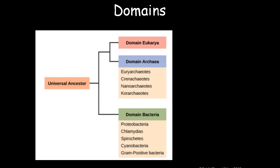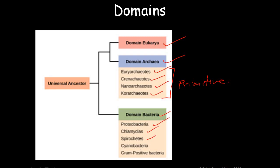Now looking at the domain, we can divide the domain as the eukaryote domain. Then we have the archaea domain which has Crenarchaeota, Euryarchaeota, Nanoarchaeota and Korarchaeota — these are all primitive types. Then domain bacteria: we have proteobacteria, chlamydias, spirochetes, cyanobacteria, gram-positive bacteria. This forms the true bacteria. This is how the domain is divided.